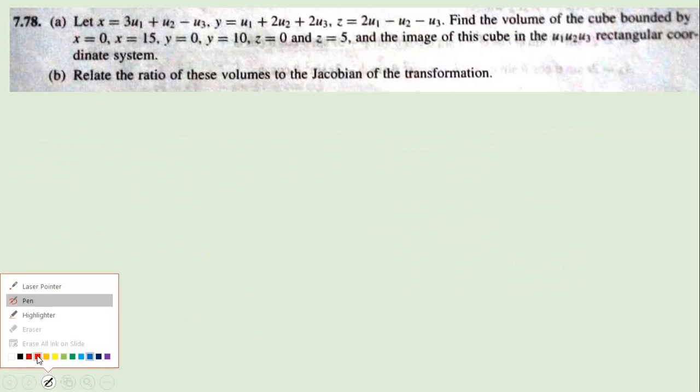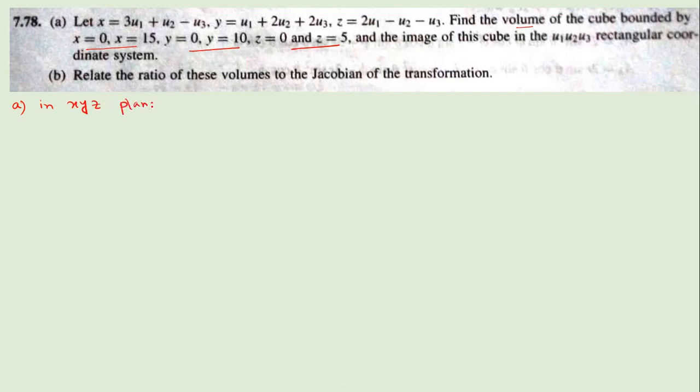The next question, 7.78, says: given x, y, z equal to the specified values, find the volume of the cube bounded by x from 0 to 15, y from 0 to 10, and z from 0 to 5. In xyz coordinates the volume is 15 times 10 times 5, which is 750.